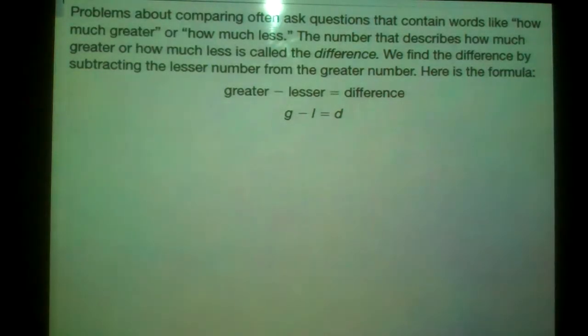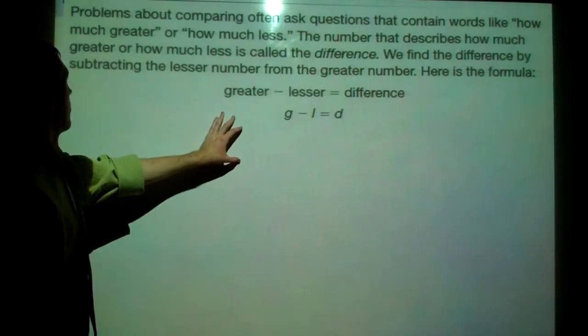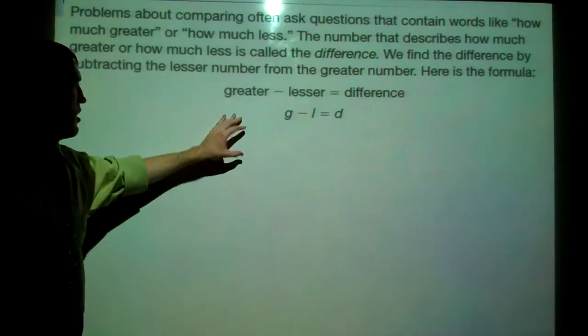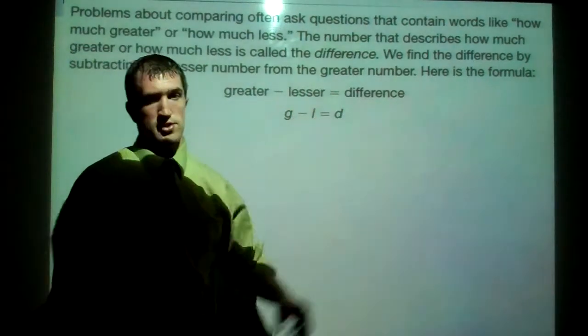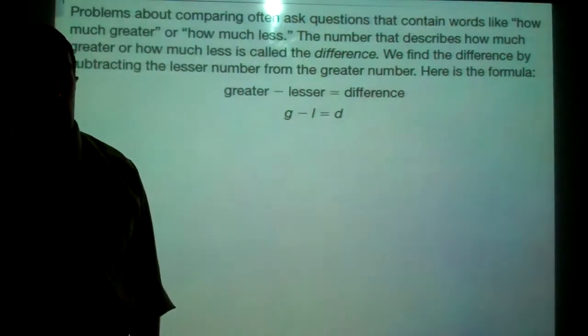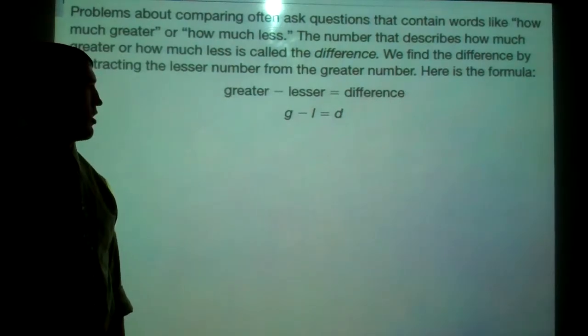Problems about comparing often ask questions that contain words like how much greater or how much less. The number that describes how much greater or how much less is called the difference. We find the difference by subtracting the lesser number from the greater number. This is our type of formula when we're talking about comparing. We have a greater number minus the lesser number that gives us the difference. The difference always goes with subtraction and we've learned that from a while back.